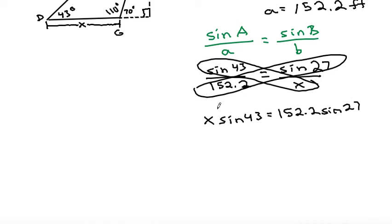And lastly, to get the x by itself, we need to get the sine of 43 away from the x. The sine of 43 is currently multiplied by x. So let's divide both sides by sine of 43. That will cancel out and it leaves us with x is equal to, we can simplify grabbing the calculator, 152.2 times sine of 27 divided by sine of 43.